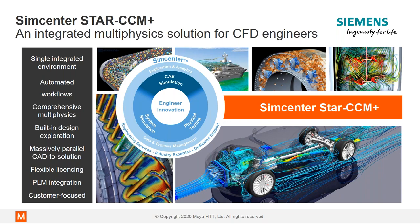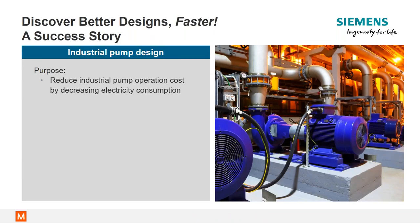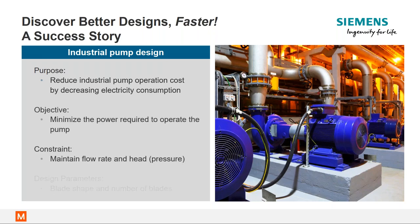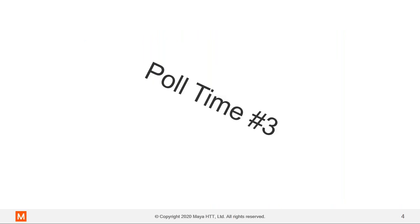Let's start with an actual industrial problem: an industrial centrifugal pump where we would like to reduce operational cost by decreasing electricity consumption. The objective is to minimize the power required while maintaining the flow rate and pressure head. The design parameters available to adjust are the blade shape and the number of blades. Before moving ahead to find the optimum solution, let's run a poll.